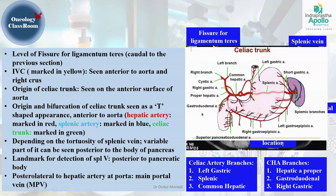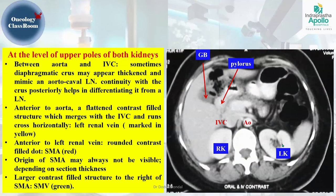Going a bit more caudally, we are at the upper poles of both kidneys. The IVC lies slightly anterior to the kidney and lateral to the aorta. In between the aorta and vena cava will be the aortocaval lymph nodes. A thickened diaphragmatic crus can sometimes be confused with a lymph node, so scrolling up and down is needed to clarify. The gallbladder, pylorus, right kidney, and left kidney are also visible at this level.